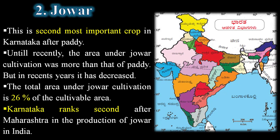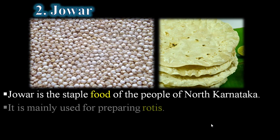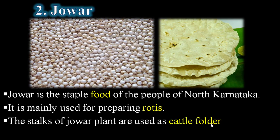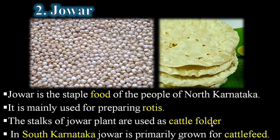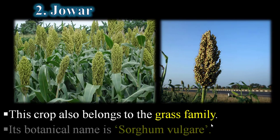Karnataka ranks second after Maharashtra in the production of jowar in India. Jowar is the staple food of the people of North Karnataka and is mainly used for preparing rotis. The stalks of the jowar plant are used as cattle fodder. In South Karnataka, jowar is primarily grown for the purpose of cattle feed.